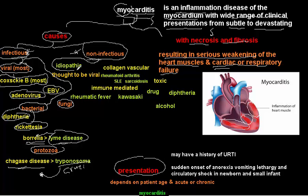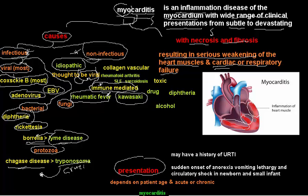Non-infectious causes include idiopathic myocarditis, which is mostly thought to be due to a hidden viral infection. Immune-mediated myocarditis occurs in conditions like rheumatic fever and Kawasaki disease. Collagen vascular diseases such as rheumatoid arthritis, SLE, and sarcoidosis are also non-infectious causes of myocarditis.